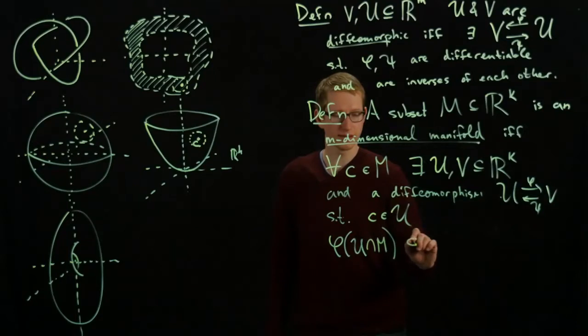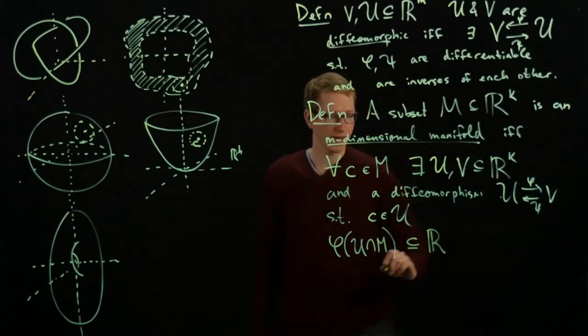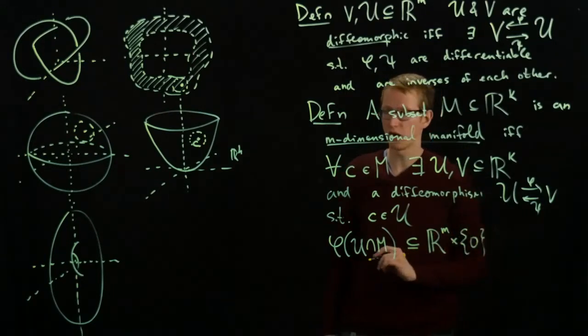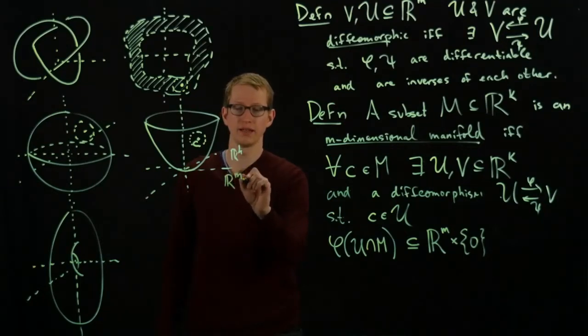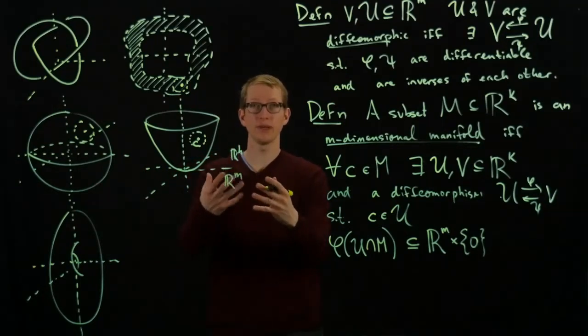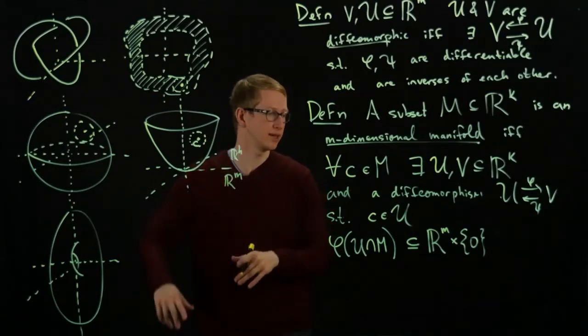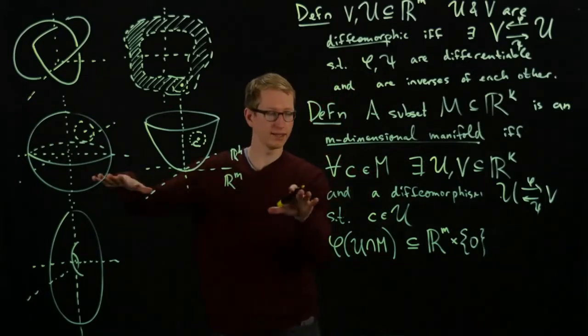then this will be a subset of RM cross 0, where RM cross 0, in this picture, RM is going to here be the plane. So we're going to assume that M is less than or equal to K, so that this definition makes sense.